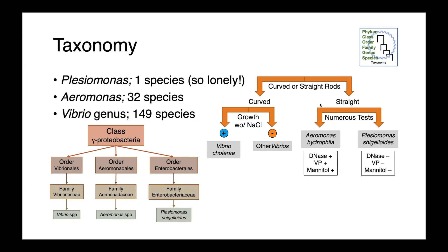Aeromonas has 32 species, and there are 149 different Vibrios. These can be differentiated morphologically based on whether they're curved rods or straight rods, with curved being our Vibrios. We can further subdivide our Vibrios based on their ability to grow without sodium chloride. Plesiomonas and Aeromonas can be differentiated from each other through a number of simple biochemical tests, including the production of DNase, acetoin via the VP test, and the ability to ferment mannitol.